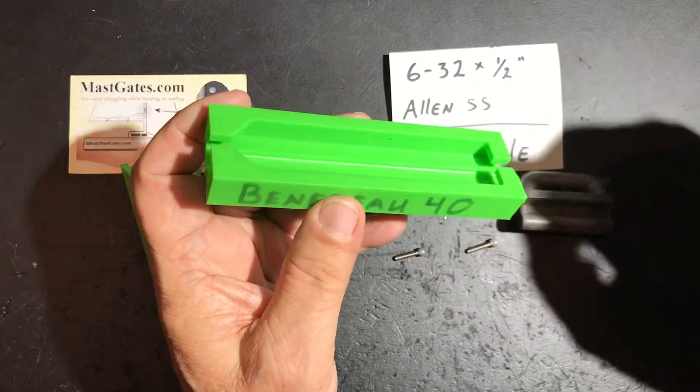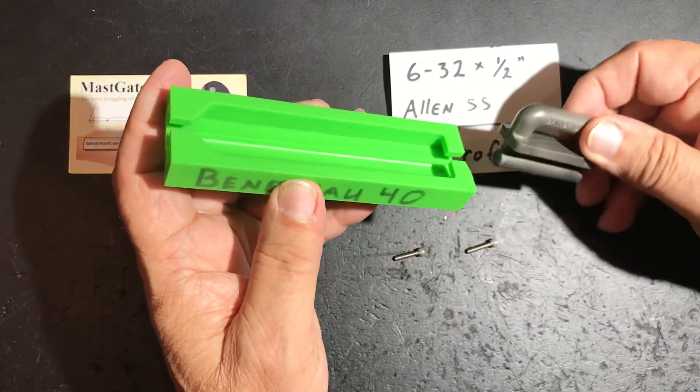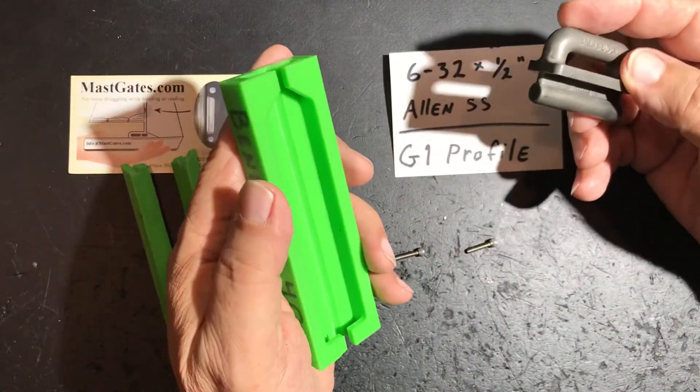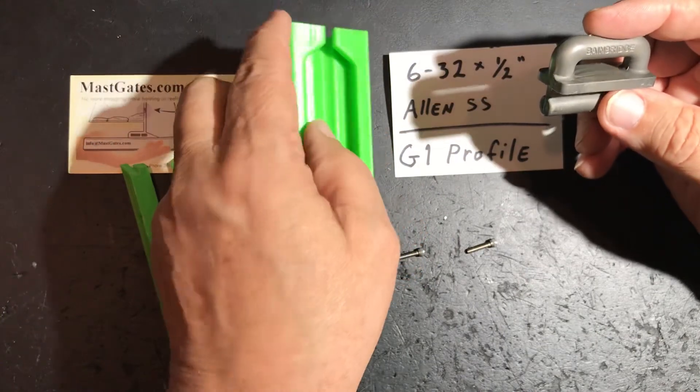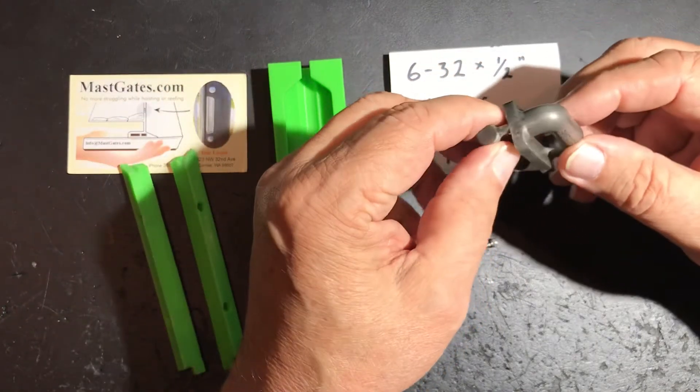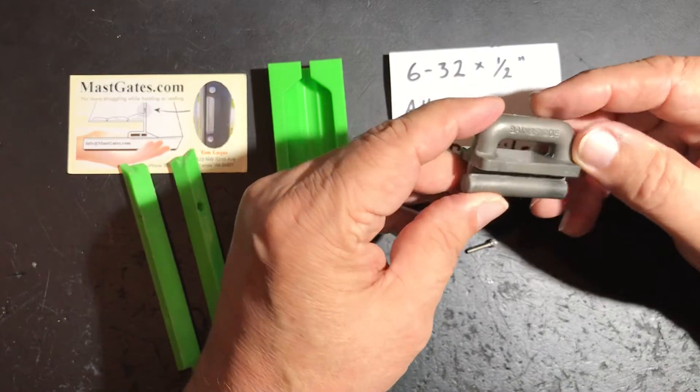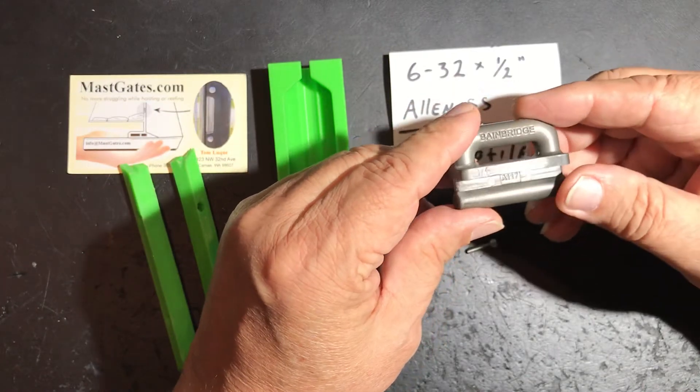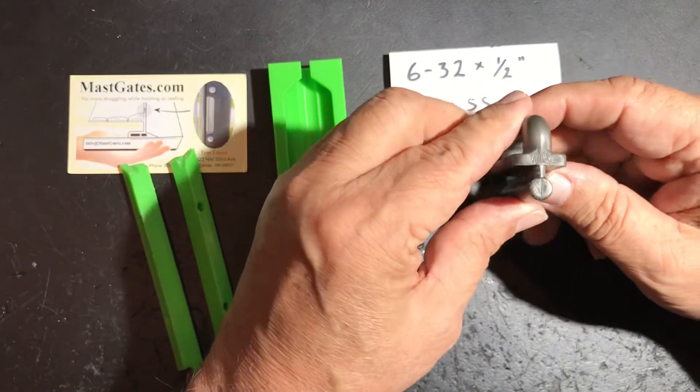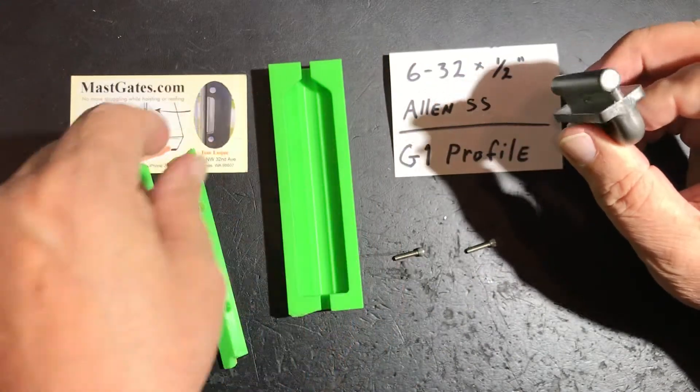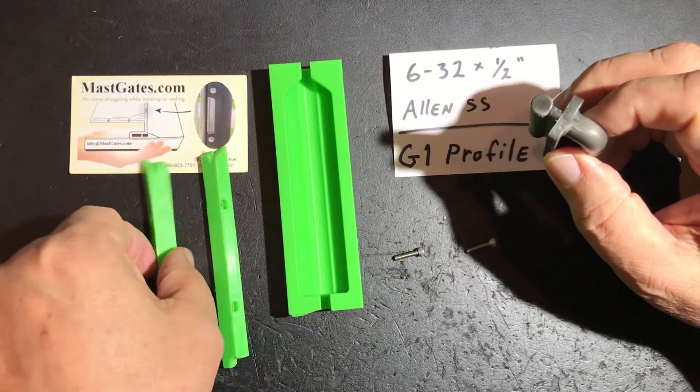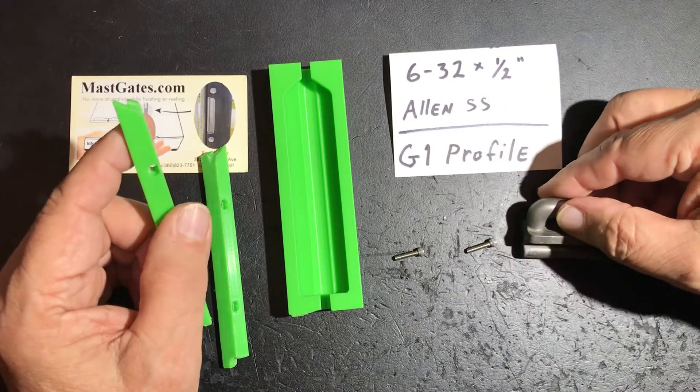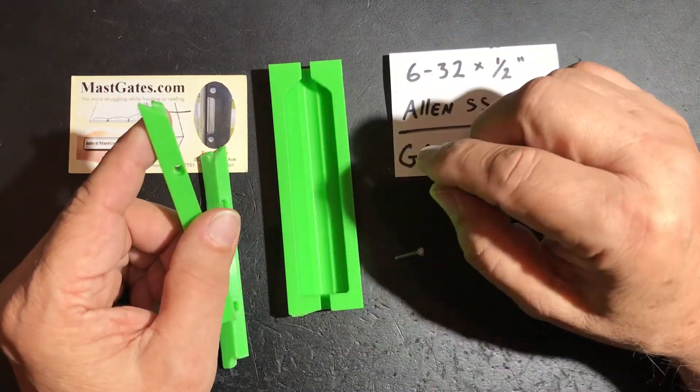I don't happen to have one, but the most popular sail slug that I've seen for large sailboats that need a compression slide is this Bainbridge A117, and it's just the right dimensions for building custom inserts that need a flush mount to the surface.